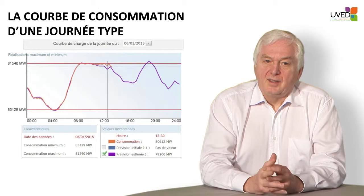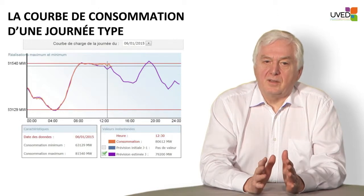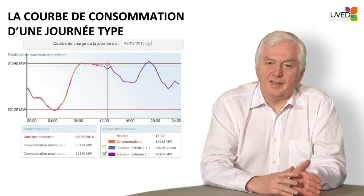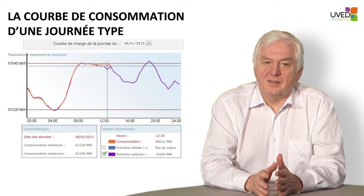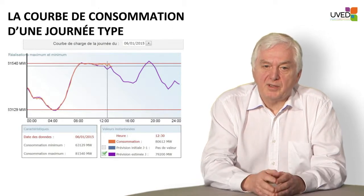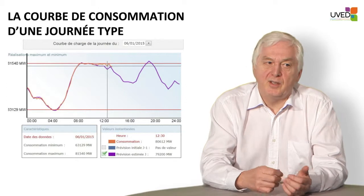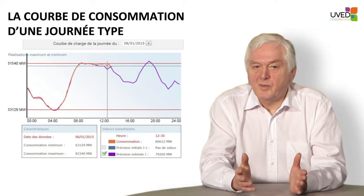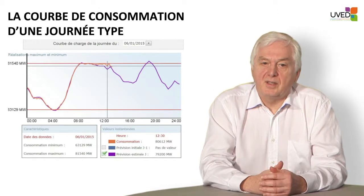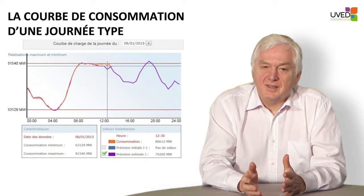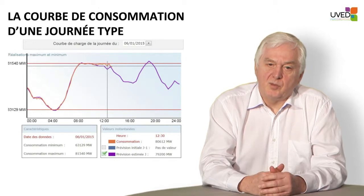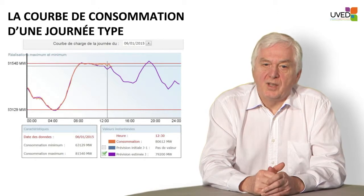So 15,000 megawatts must be found in less than three hours. Bear in mind that consumption must match production and production must match consumption — at any given time, production must follow consumption. We can't ask people to call before they switch on their coffee machine, and yet everybody does that more or less at the same time, and industrial plants start operating. So hydroelectricity can help mitigate the peak effect.